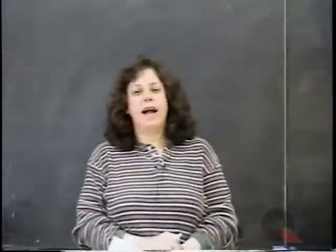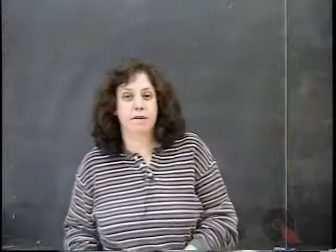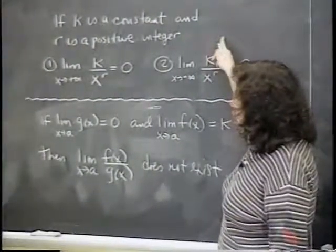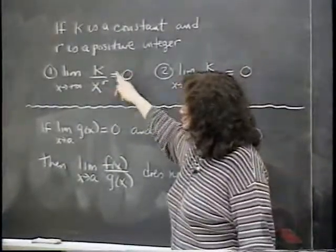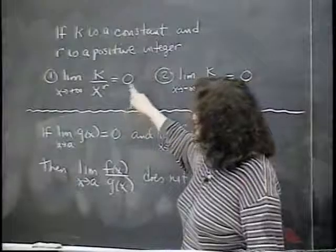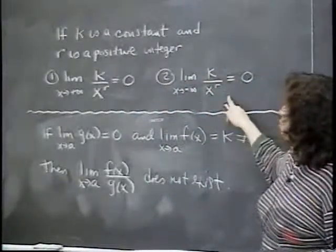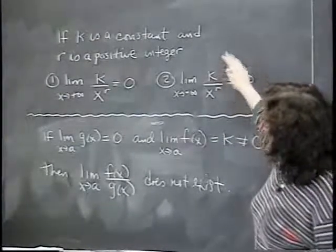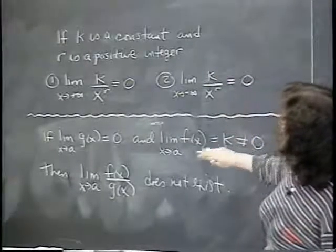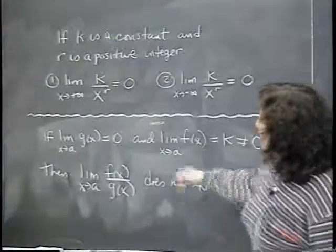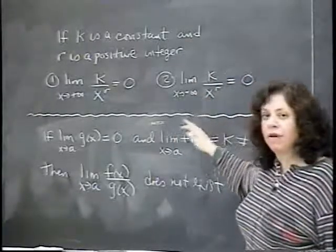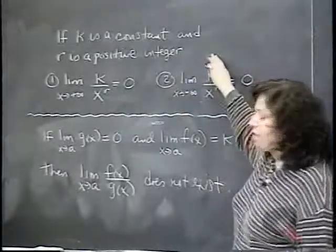In this video we're going to practice evaluating limits at infinity and infinite limits. Before we get started, I want to go over some basic ideas. If k is a constant and r is a positive integer, then the limit of k over x^r as x approaches positive or negative infinity is zero. The numerator is fixed while the bottom is getting very large in absolute value, so something fixed over something huge goes to zero.